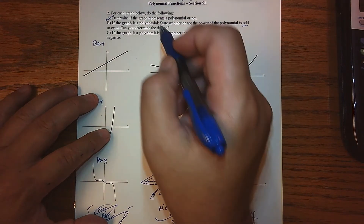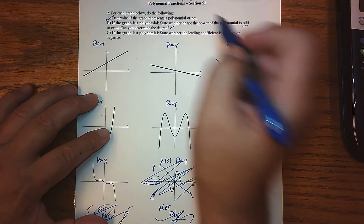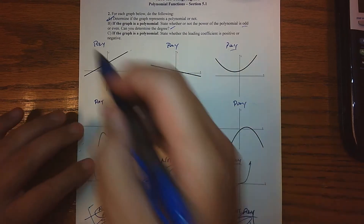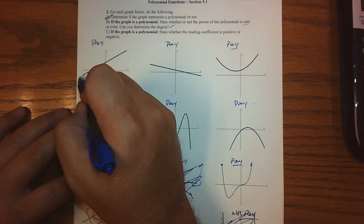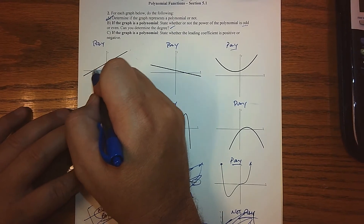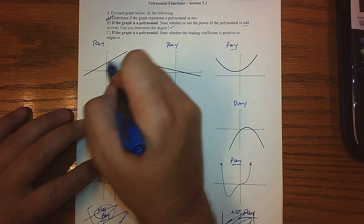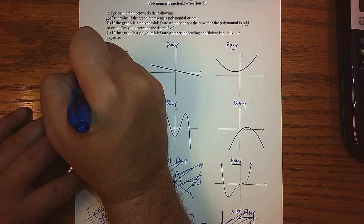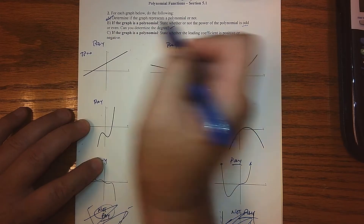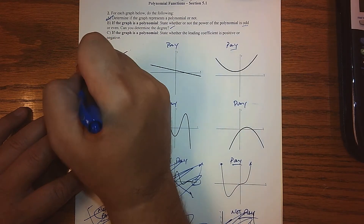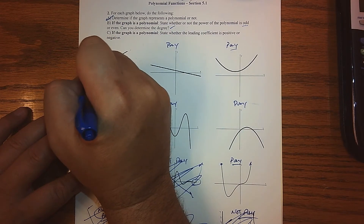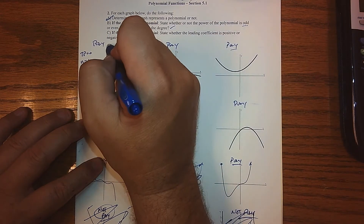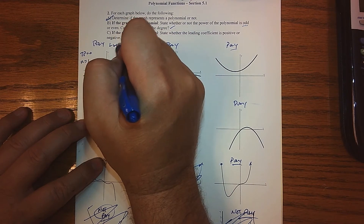And then I'm going to go deeper — can you actually determine the degree? In this case, what we notice is that there's no turning points. Our number of turning points, let me call them TP, is zero. So this means our n is equal to one. So we're basically talking about a line.